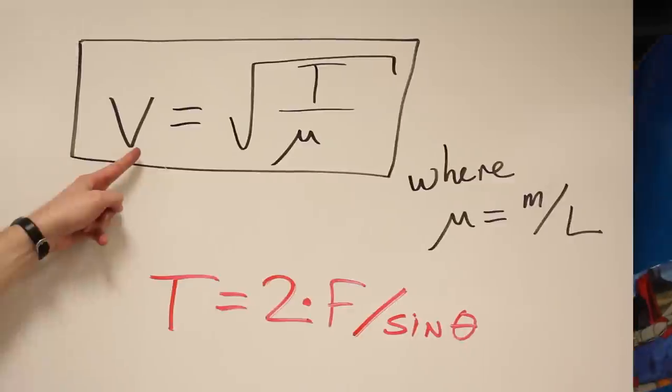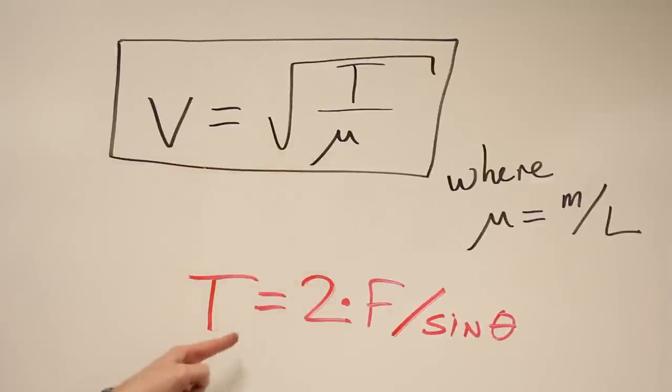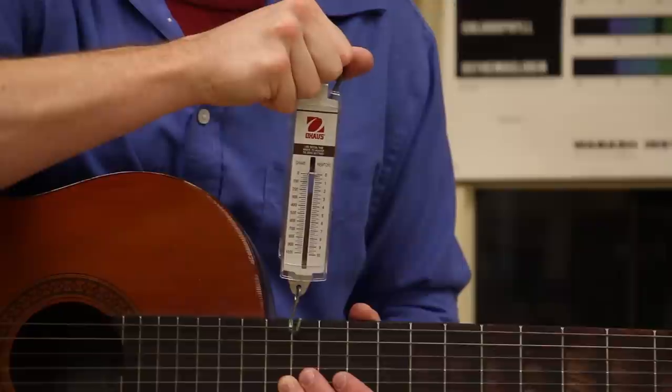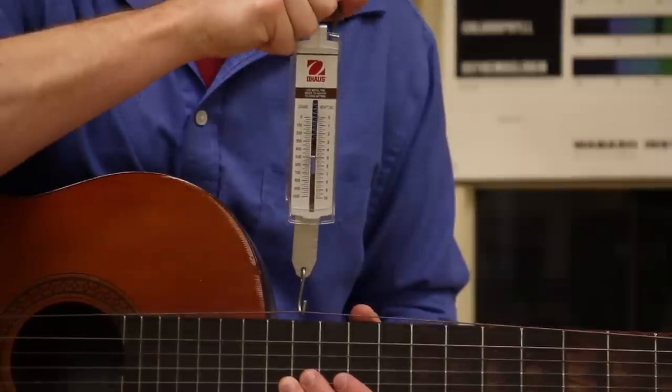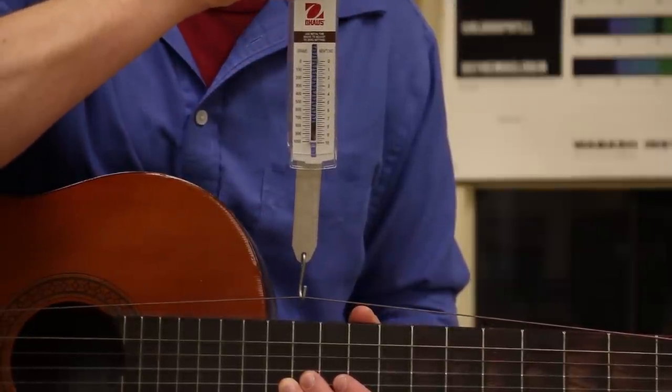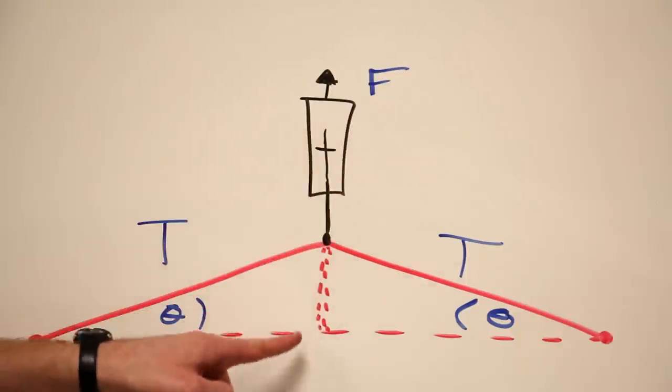If you want to verify the formula, you'll have to measure the tension in the string. You can estimate the tension with a spring scale and by analyzing the triangle that results. The tension equals twice the force of your pole divided by the sine of theta.